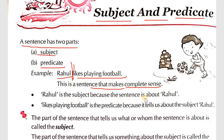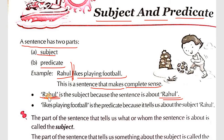Rahul is the subject because the sentence is about Rahul. When we write an application, we write a subject line — for example, 'Regarding leave' or 'Regarding transfer certificate.' Similarly, in a sentence, the subject tells us who or what the sentence is regarding. That is the first point.